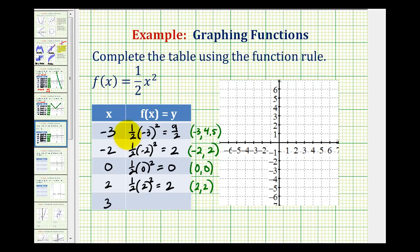And then we have x equals three, so we'd have y equals one half times three squared, which is nine halves, or four point five. So the graph of the function also contains the point three, four point five.